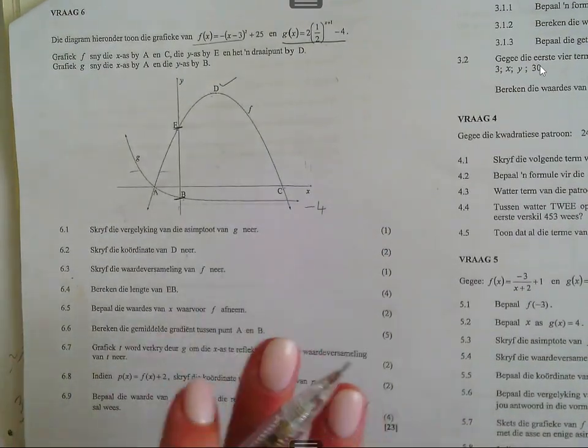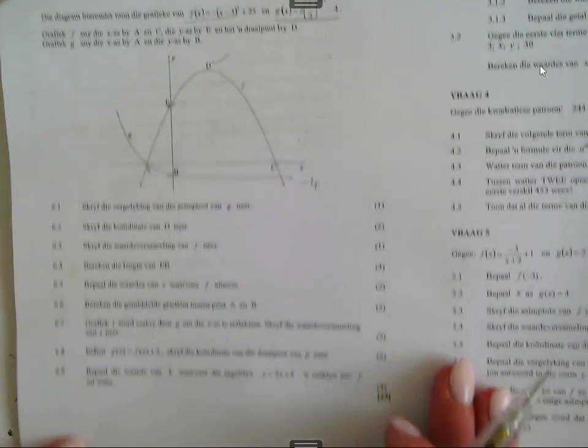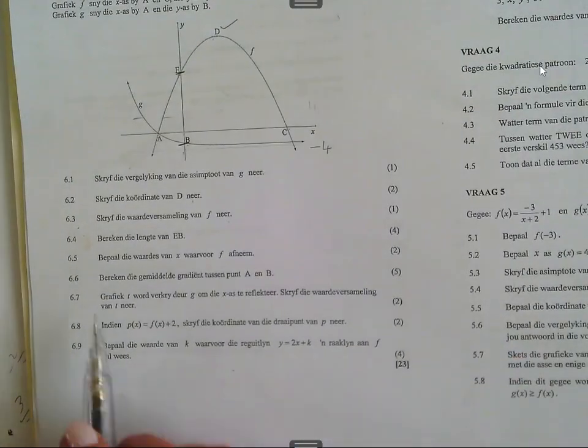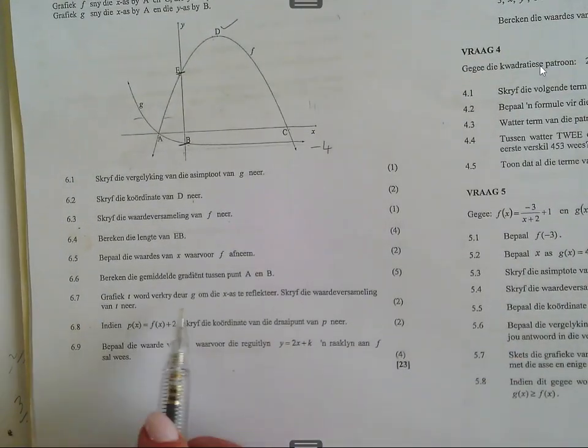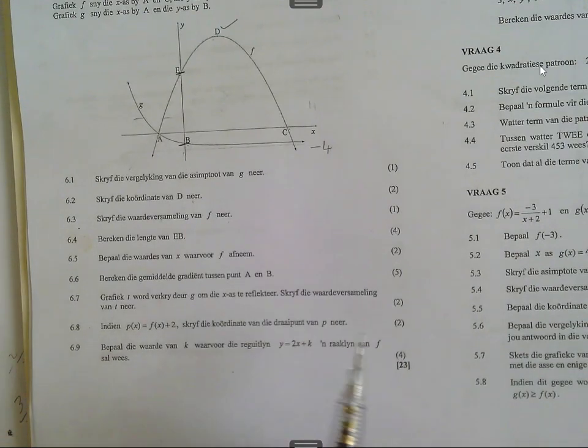Gemiddelde gradien, dit kan jy doen. Jy het A's koordinaat nodig en B's koordinaat nodig. Gebruik, grafiek T word verkry dier G in die x as te reflecteer.